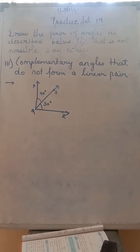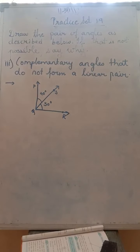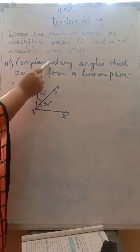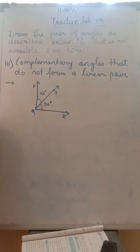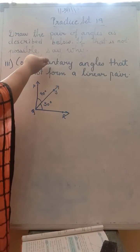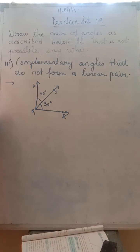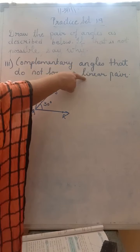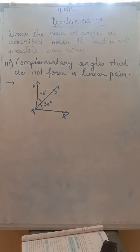Third question: complementary angles that do not form a linear pair. Complementary angles are 90 degrees and linear pair are 180 degrees. So can we draw complementary angles? Of course — there will not be a linear pair, because they are 90 degrees and not 180. So this will be the answer.